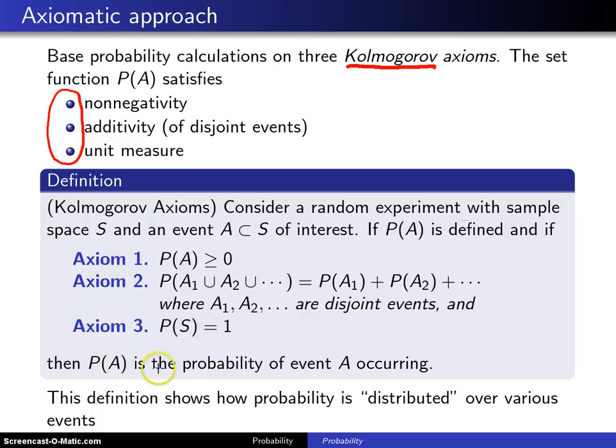Then P of A is the probability of event A occurring. It is quite amazing that just those three axioms are enough to build all of probability theory, but on the next few slides, we'll see how that works.